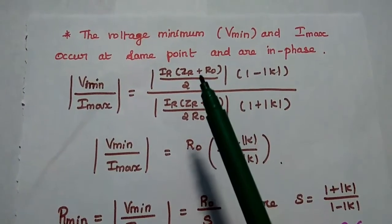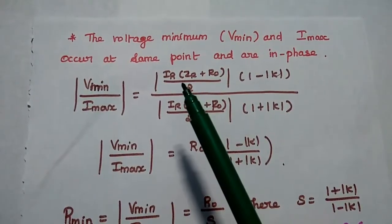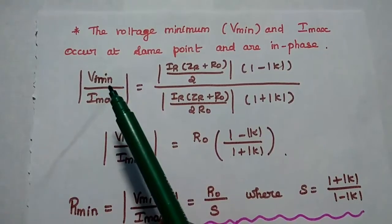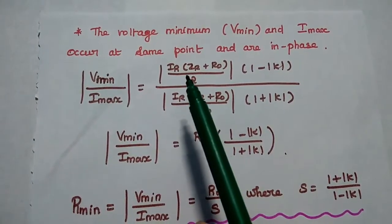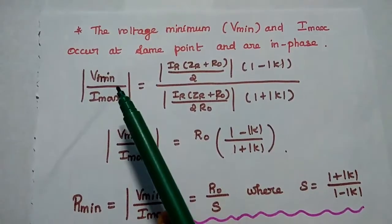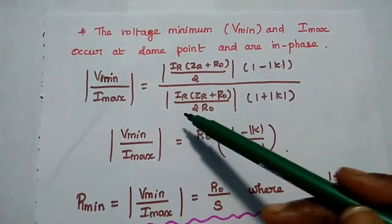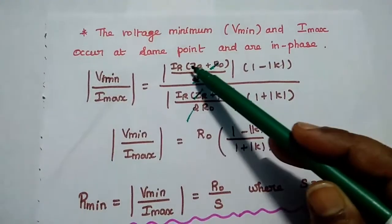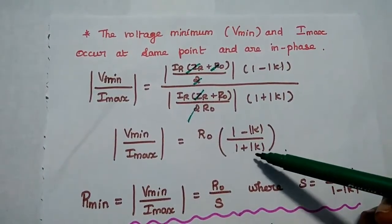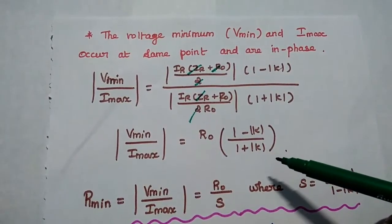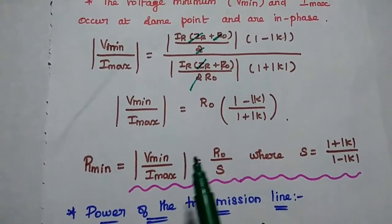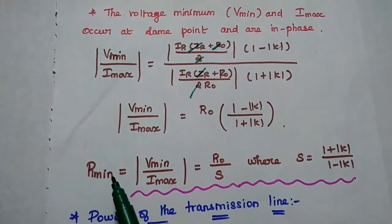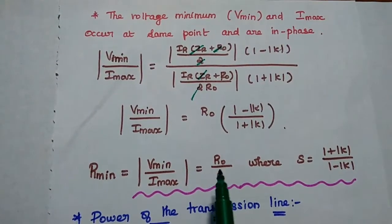Whenever the voltage is minimum, the current is maximum at the same point and both are in phase. Taking the ratio V_min / I_max: V_min = I_R × (Z_R + R₀) / 2 × (1 − K) and I_max = I_R × (Z_R + R₀) / (2R₀) × (1 + K). Dividing these gives R₀ × (1 − K) / (1 + K) = R₀ / S. Therefore R_min = V_min / I_max = R₀ / S.